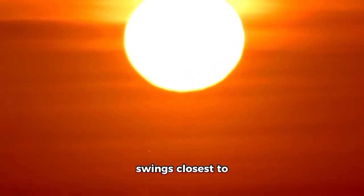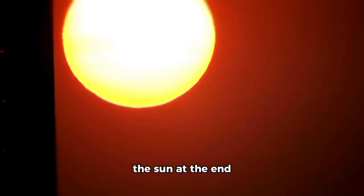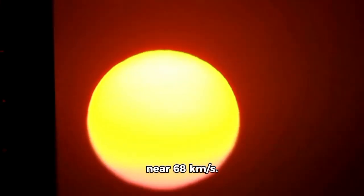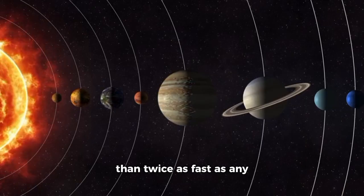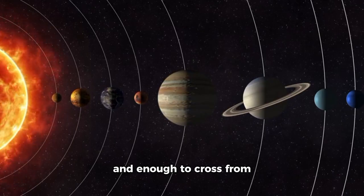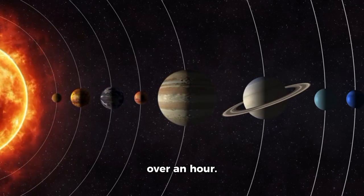By the time it swings closest to the sun at the end of October, that speed will peak near 68 kilometers per second. That's significantly more than twice as fast as any planet in the solar system and enough to cross from Earth to the moon in just over an hour.